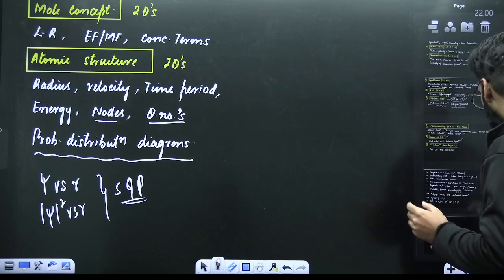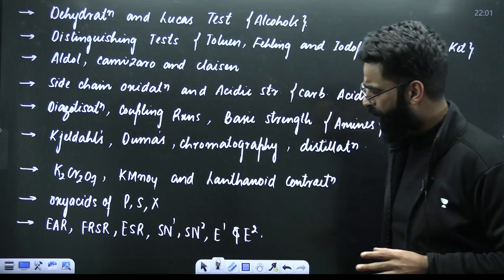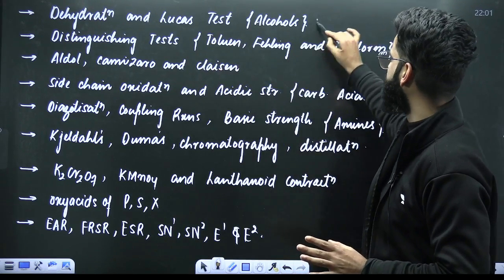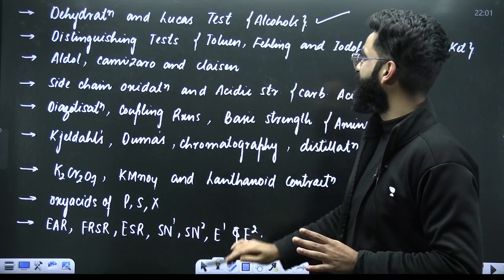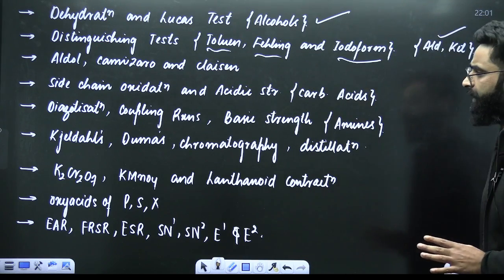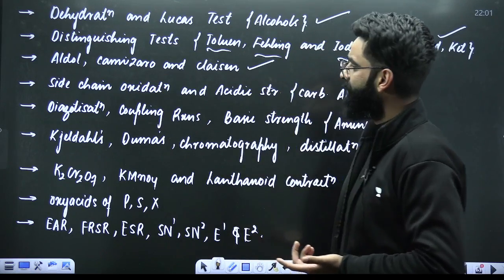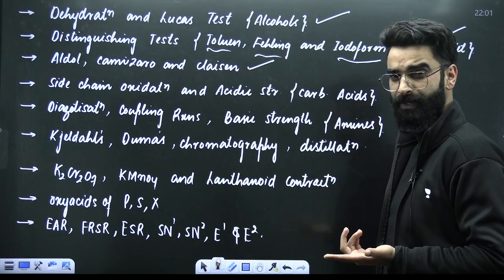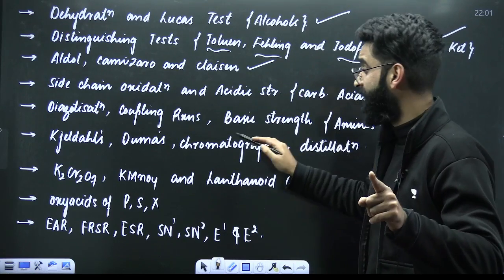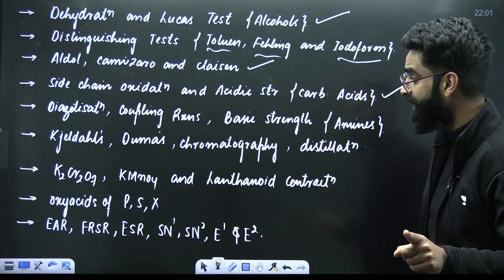Now there are some other topics. They are again the most important ones. You can expect one one question from every topic which is mentioned here. Dehydration, Lucas test from alcohols. Expect equation here. Distinguishing test which involves Tollens, Fehling and Iodoform from aldehydes ketones. Aldol, Cannizzaro reaction, Claisen. This again forms, I mean you can expect equations from these for sure. And do these topics directly from NCERT by the way. Hunsdiecker oxidation and acidic strengths in case of carboxylic acids.